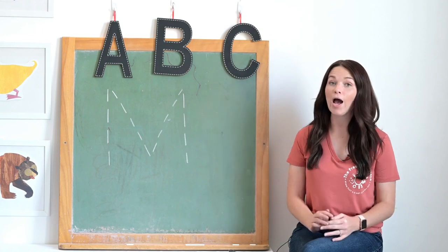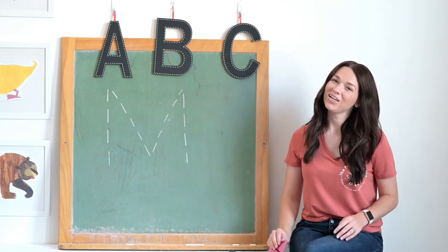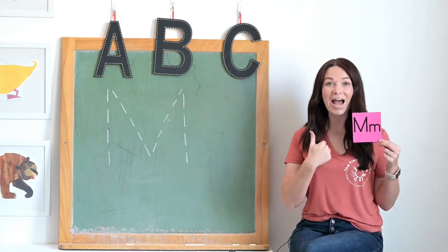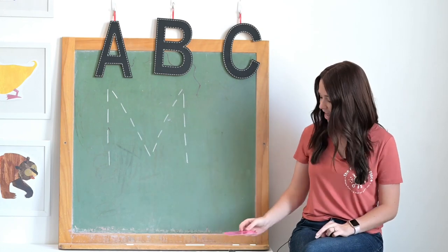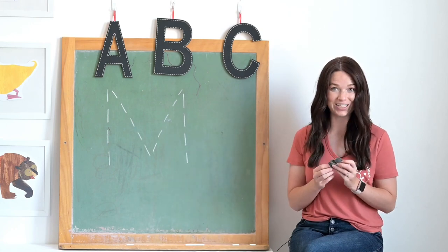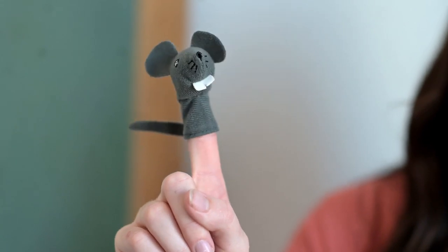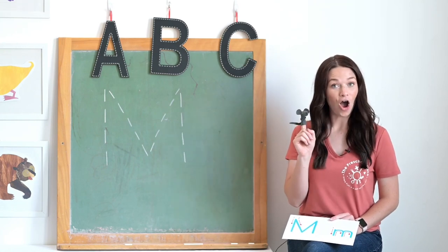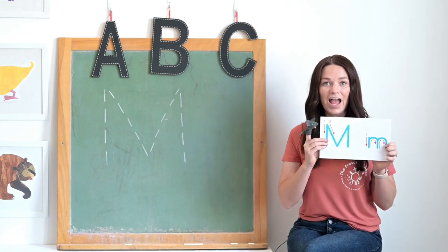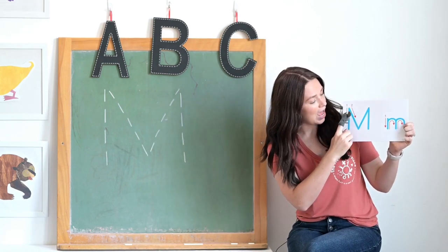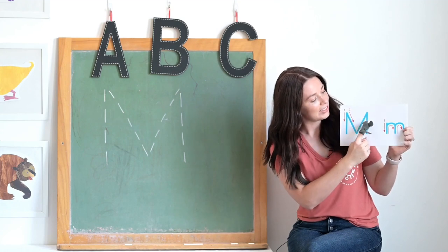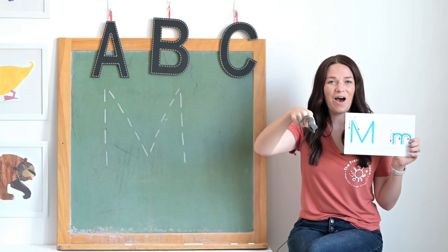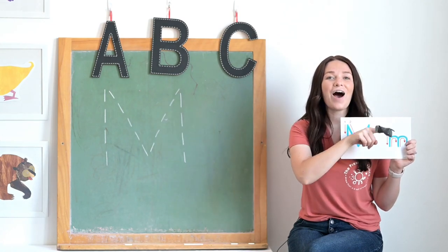Now I would like to teach you how to write the letter M. My name is Miss Megan — my name starts with the letter M. I have a special friend here with me today — this is Mr. Mouse. Mr. Mouse is going to help us learn how to write the letter M. When we trace the letter M, we do it like this: down, up, slant, down, slant, up, down M. There are two letter features in the letter M: two soldier straight lines and two slanted lines.